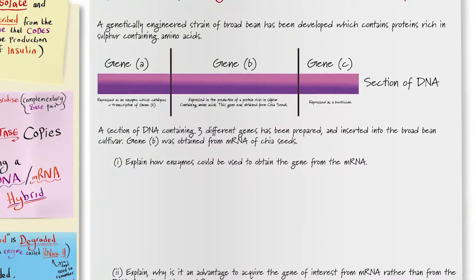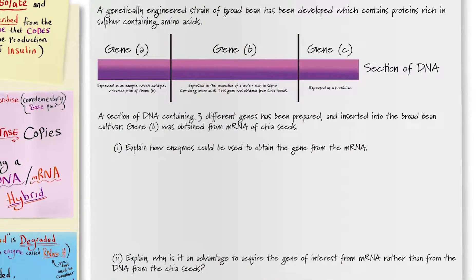Next we have this question about a genetically engineered strain of broad bean which has been developed and contains proteins rich in sulfur containing amino acids. A section of DNA containing three different genes has been prepared and inserted into the broad bean cultivar. Gene B was obtained from messenger RNA of chia seeds. The question is explain how enzymes could be used to obtain the gene from the messenger RNA.